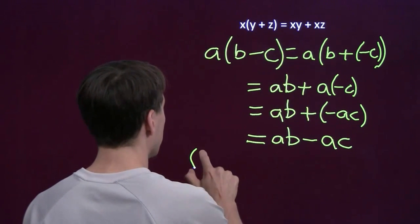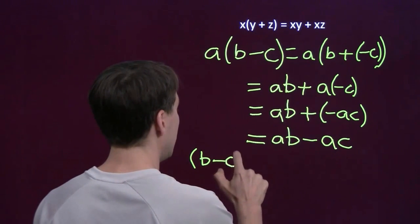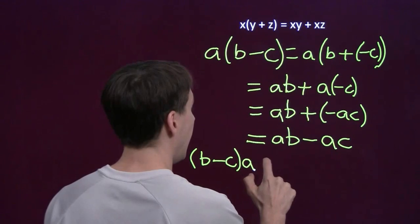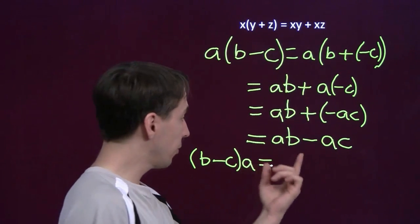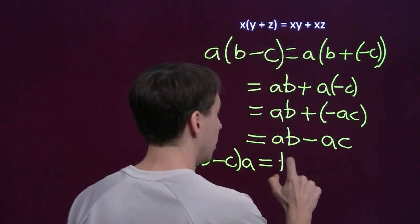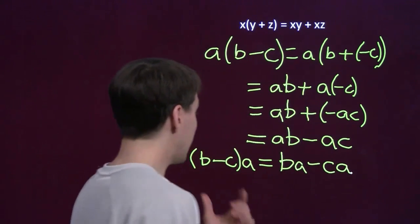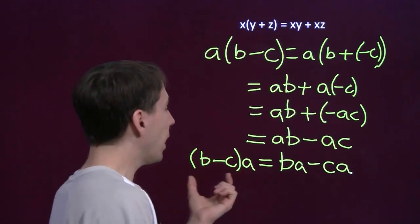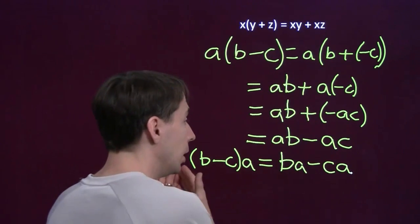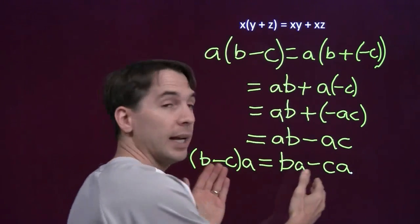I can write this as b minus c times a. And that equals, well, I can reverse the order of each of these: b times a minus c times a. So I can have the subtraction on the left or on the right, and I can use the distributive property to expand, to multiply it out.